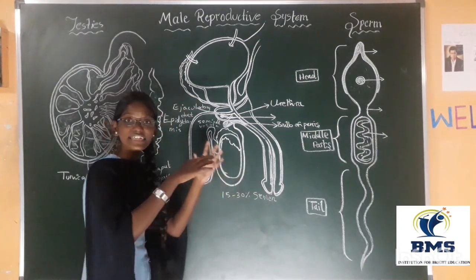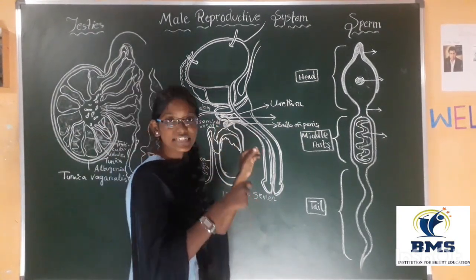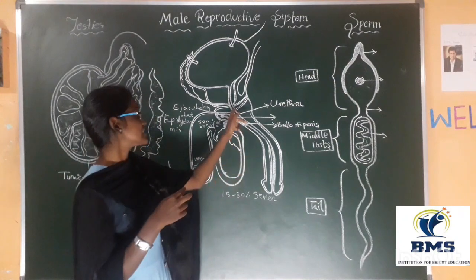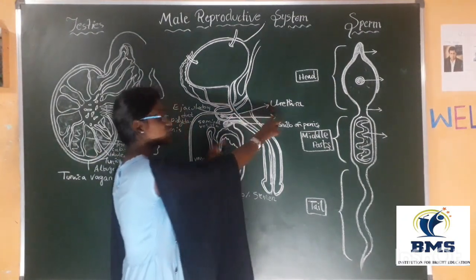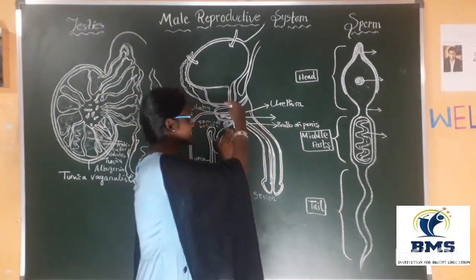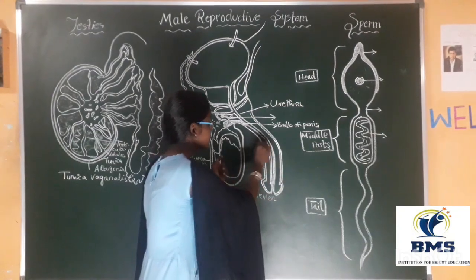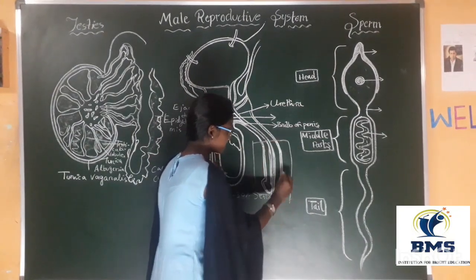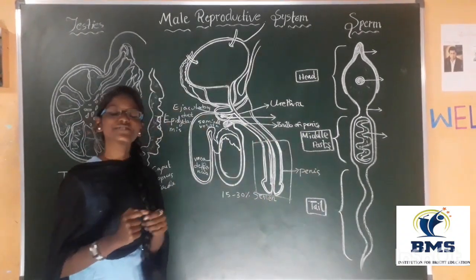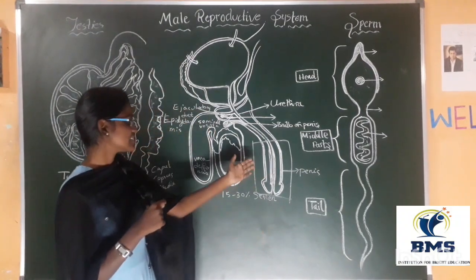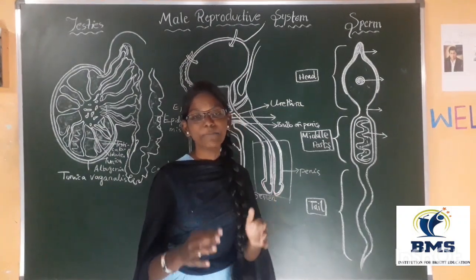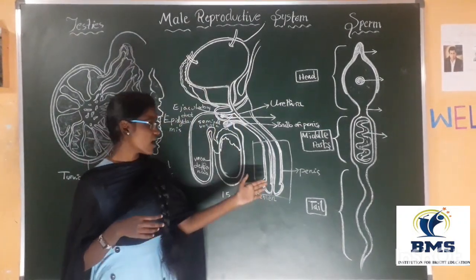After that, the ejaculatory duct will come one way and mix with the urethra. This is the urethra — they both combine and lead to the penis. This is the structure of the penis. The penis is very helpful for the ejaculation of the semen into the vagina.